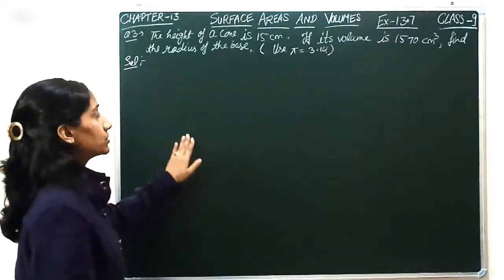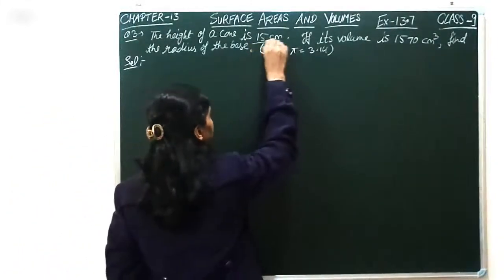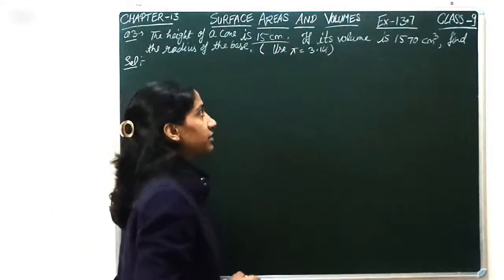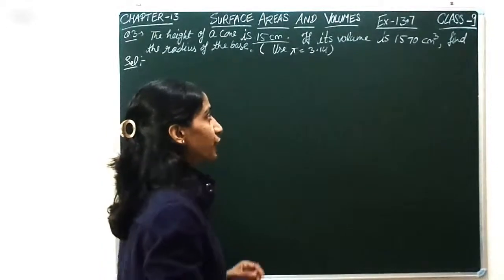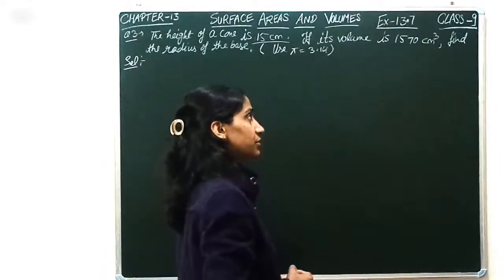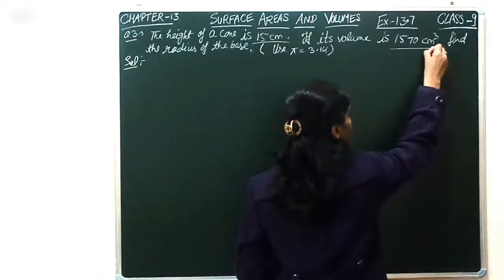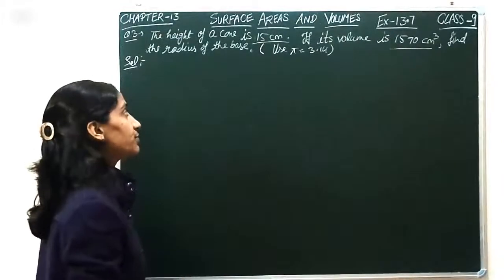The height of a cone is 15 cm. If its volume is 1570 cm³, we find the radius of the base.